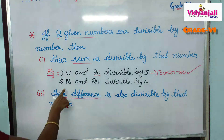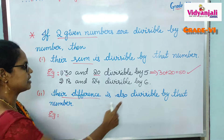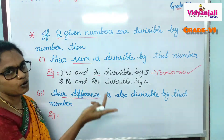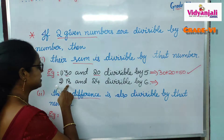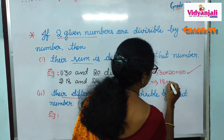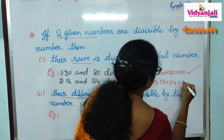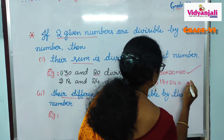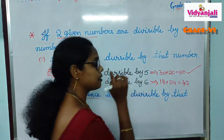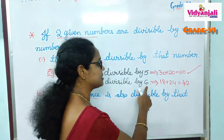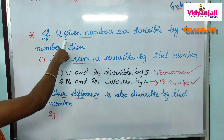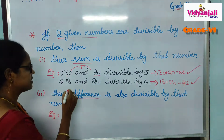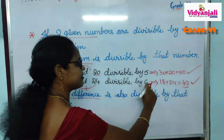Let us check one more example. 18 and 24 are both divisible by 6 — 6 threes are 18, and 6 fours are 24. Let us add and check: 18 plus 24 is 42. Is 42 divisible by 6? Yes — 6 sevens are 42. So whatever sum we get from two numbers each divisible by 6 is also divisible by 6.